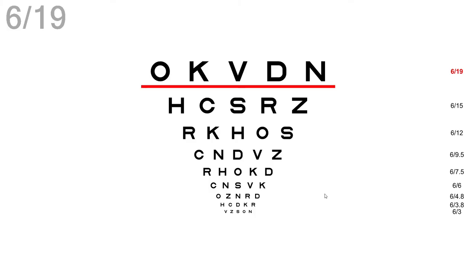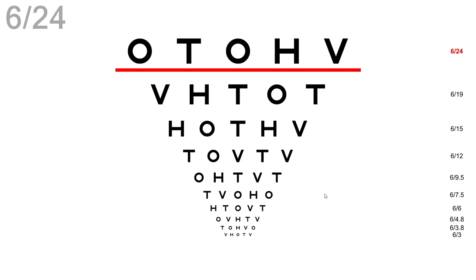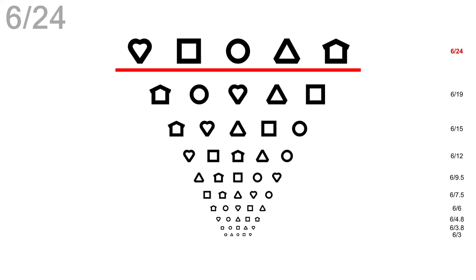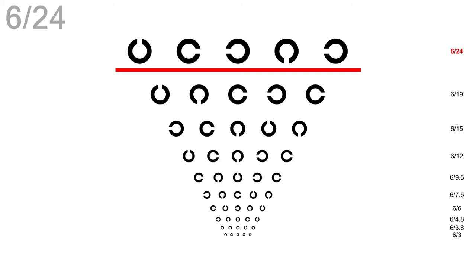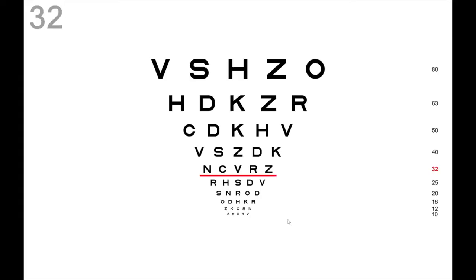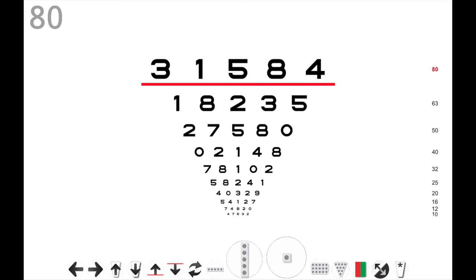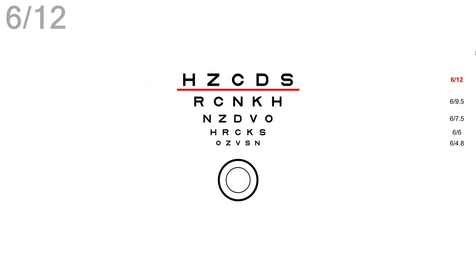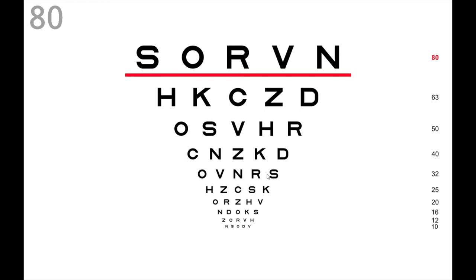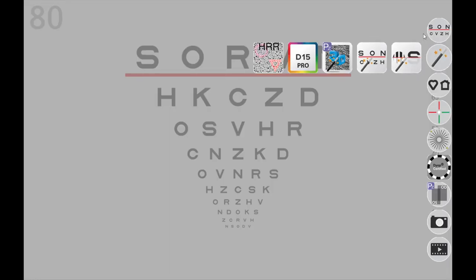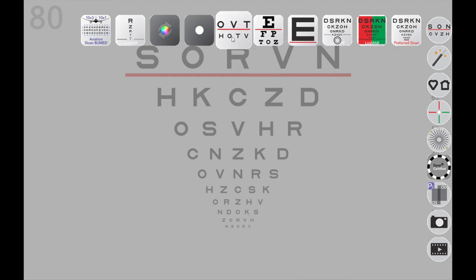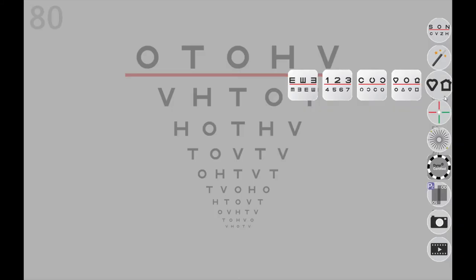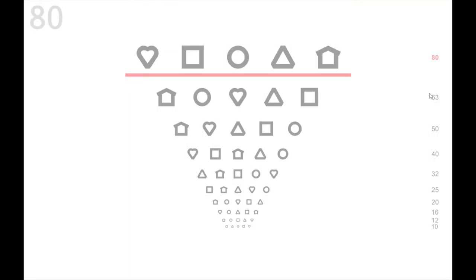Displaying other optotypes with a keyboard: press the T key to display the HOTV. Press the K key to toggle between pediatric symbols, the E chart, and the C chart. Press the 1 key to access numbers. Press the J key to display a combined letter and astigmatic chart. These can also be accessed with the mouse on the right-hand side menu — move the mouse over to the right-hand side dock, select the third icon, and then select which optotype you wish to display. All the optotypes can be masked and randomized.